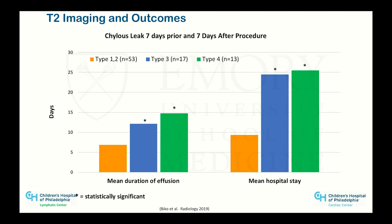Only type 4 patients had mortality, transplant, or TCPC takedown. Type 1 and 2 patients did perfectly fine during Fontan palliation. Type 3 had increased effusions but made it through. Type 4s just don't make it. So T2 imaging — two and a half minutes of looking at fluid — is probably the best predictor of which patients will easily go through single ventricle palliation and which won't.